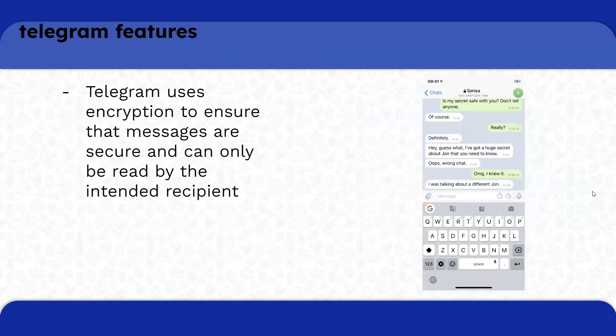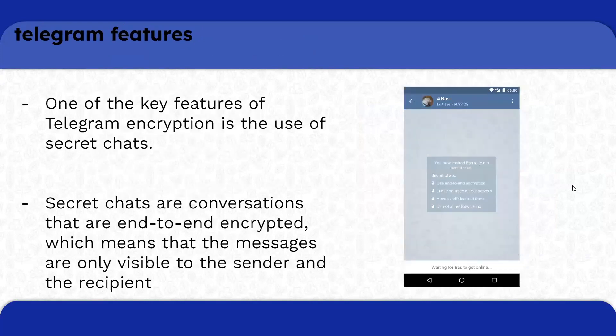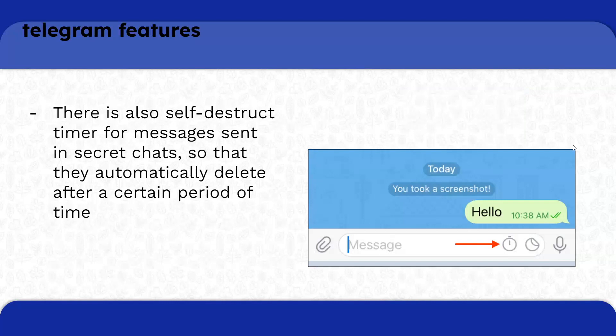Some of Telegram's features: Telegram uses encryption to ensure that messages are secure and can only be read by the intended recipient. One of the key features of Telegram's encryption is the use of secret chats. Secret chats are conversations that are end-to-end encrypted, which means the messages are only visible to the sender and the recipient. There is also a self-destruct timer for messages sent in secret chats, so that they automatically delete after a certain time.